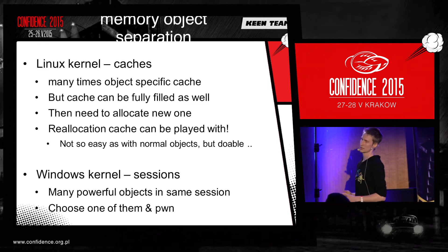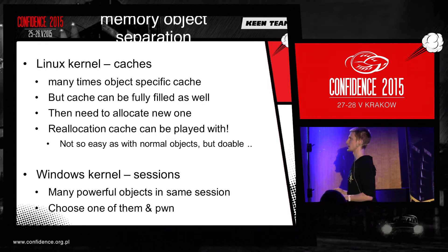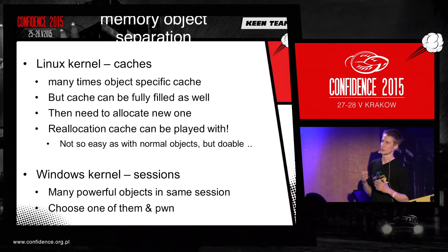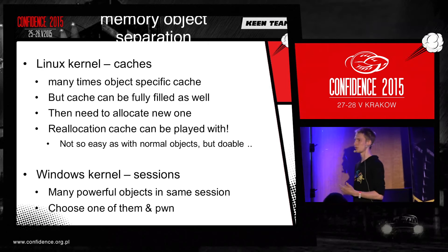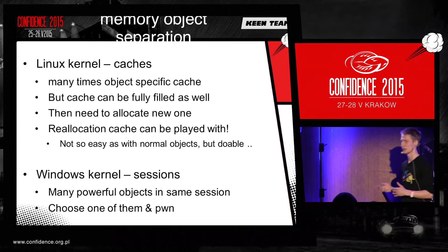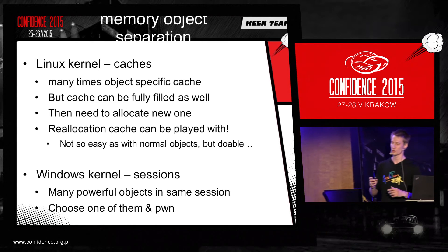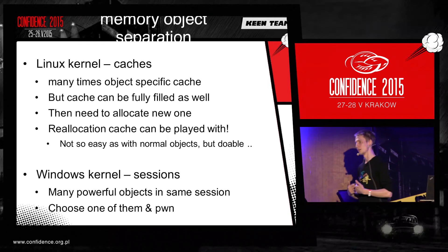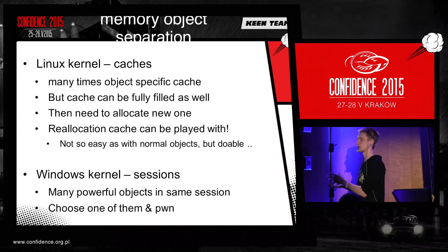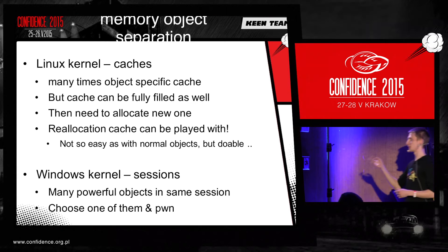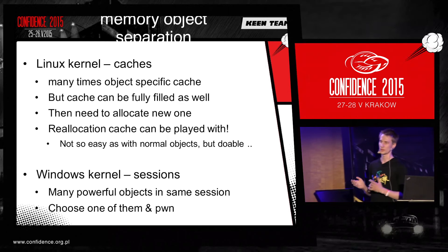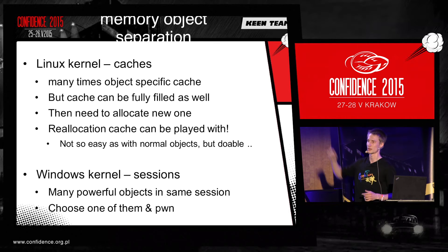On Windows kernel it's a bit easier, because it has sessions and channels, and in every session there are a lot of objects. All the objects which from user mode you can allocate, free, or somehow control the content — I call them really powerful objects. So on Windows kernel it's no big deal with allocating from kernel caches.